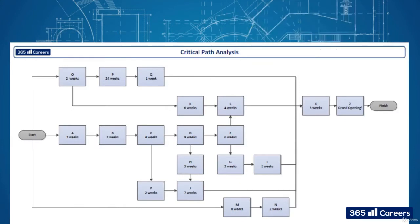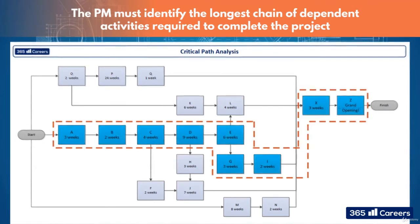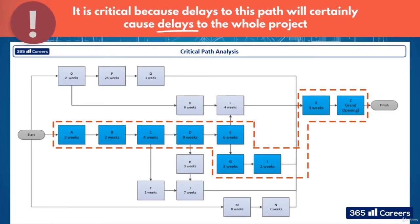What you must do as a project manager is identify the longest chain of dependent activities required to complete the project. This is called the Critical Path. It is critical because delays to this path will certainly cause delays to the whole project.